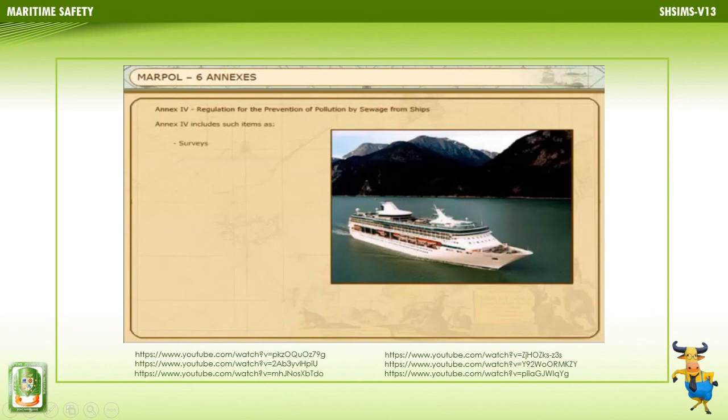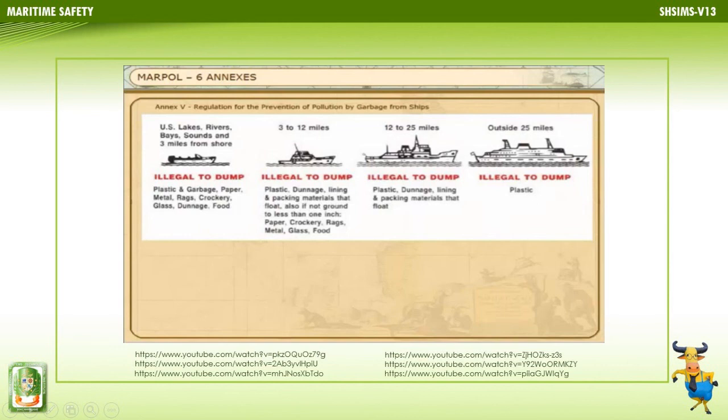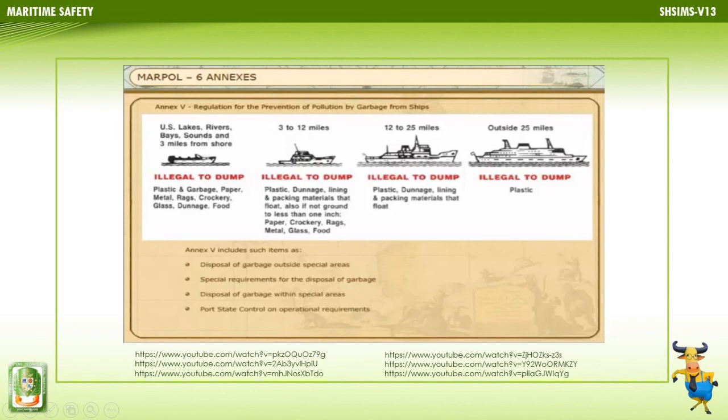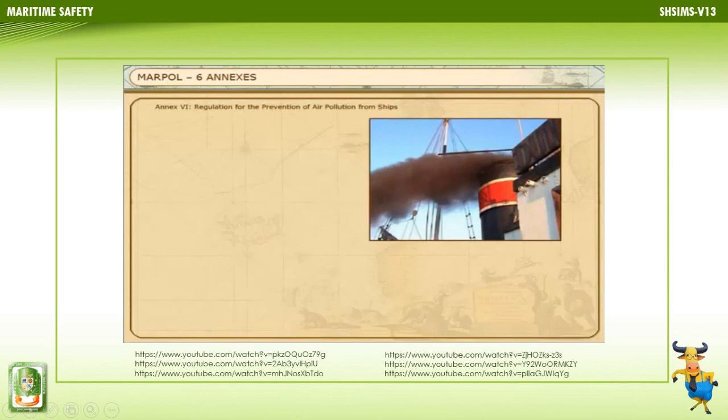Annex 5 covers Regulations for the Prevention of Pollution by Garbage from Ships, including the Disposal of Garbage Outside Special Areas, Special Requirements for the Disposal of Garbage, Disposal Within Special Areas, and Port State Control on Operational Requirements. Annex 6 covers Regulations for the Prevention of Air Pollution from Ships, including guidelines for the emission of different substances, specific requirements for testing, surveying and certification, and fuel quality.